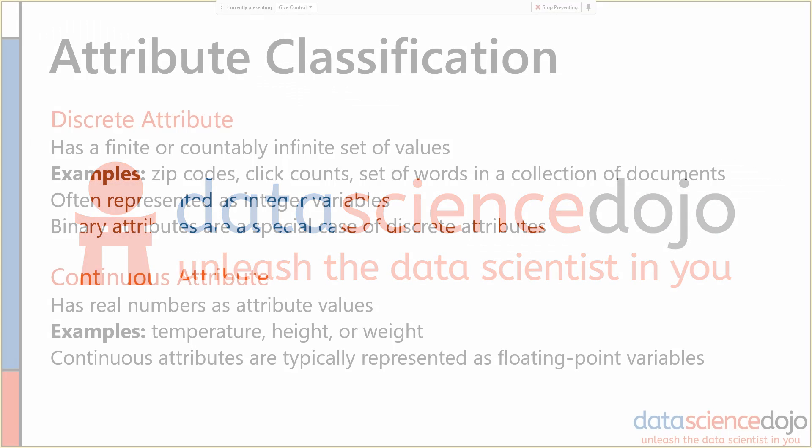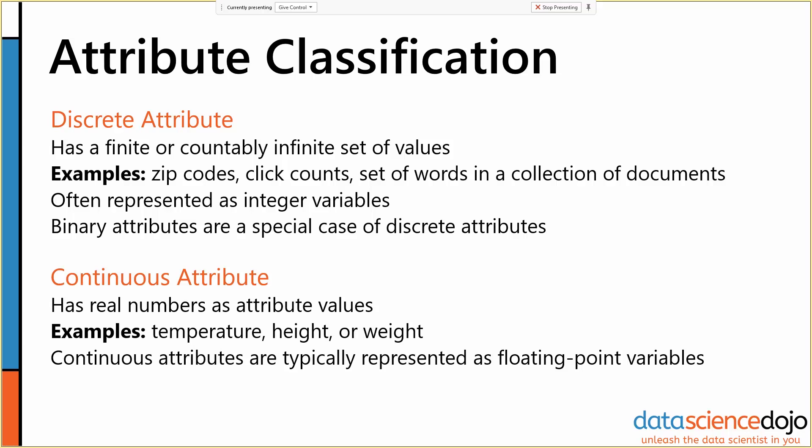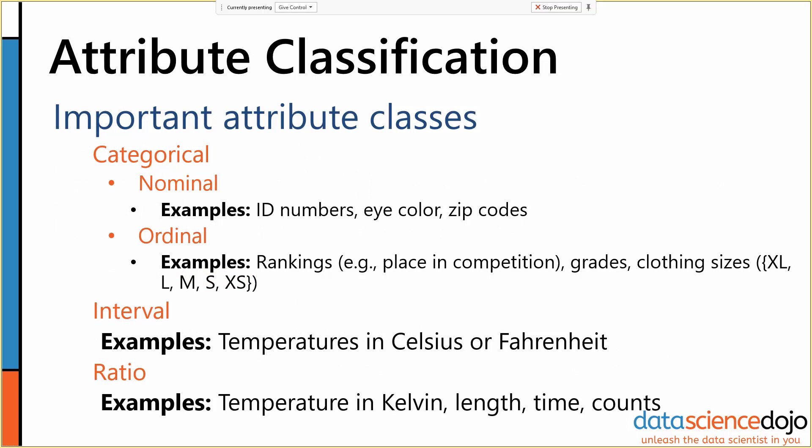Within these two big categories of attributes, we have some subsets that are also important to think about. One of the most important of these is the distinction between categorical attributes and non-categorical attributes. Categorical attributes are discrete attributes that specifically have a finite set of values that they are allowed to take.